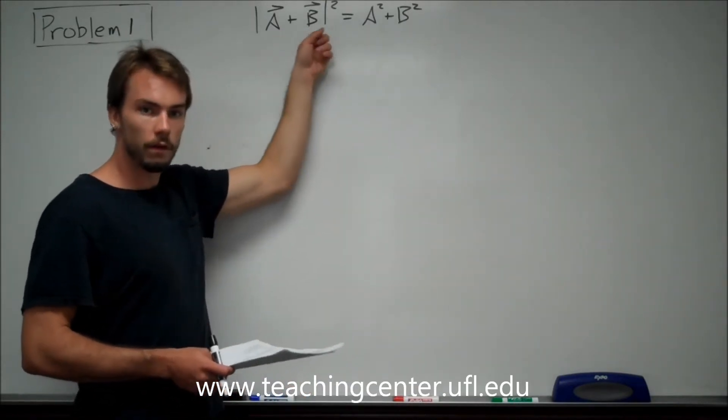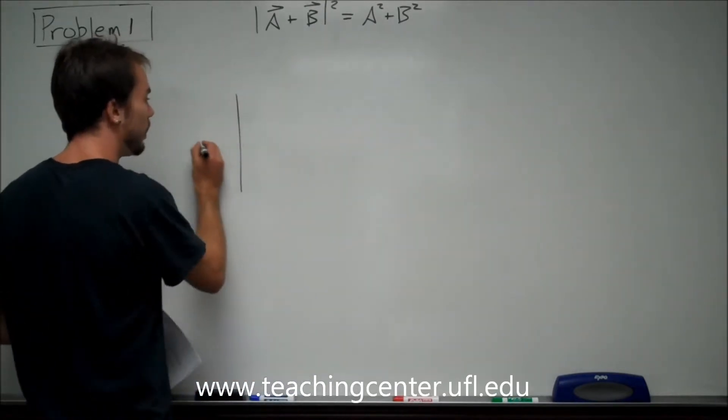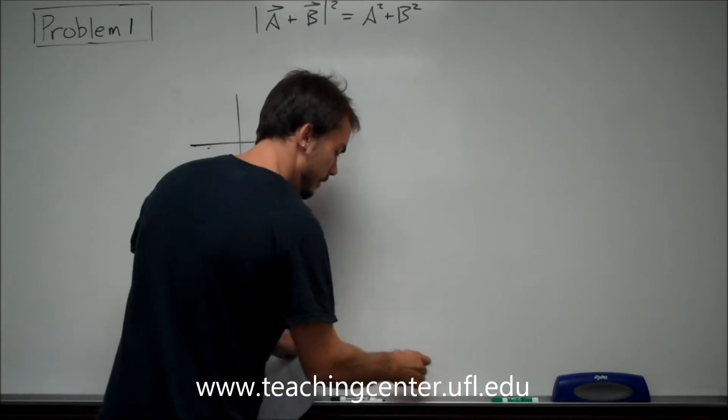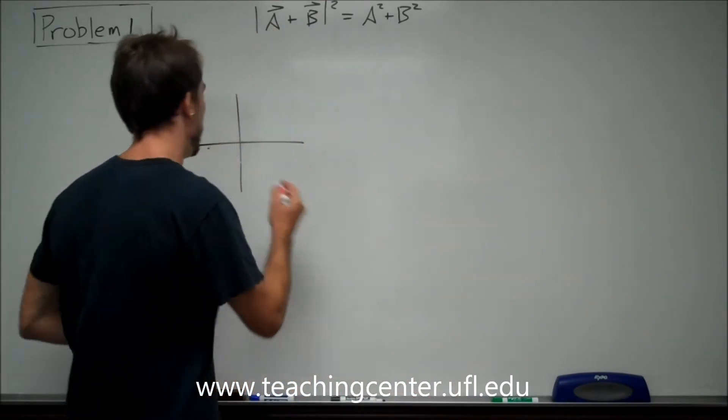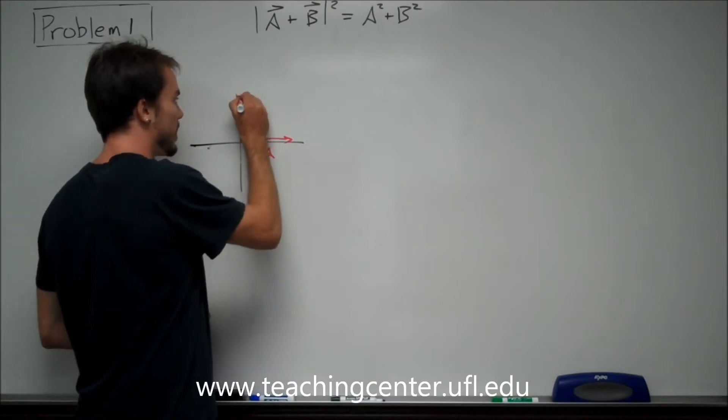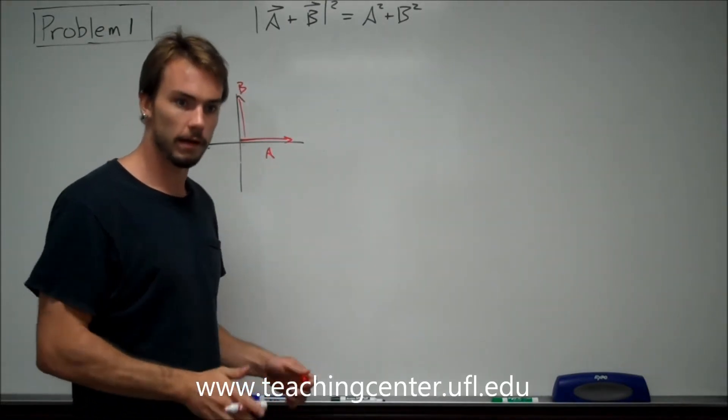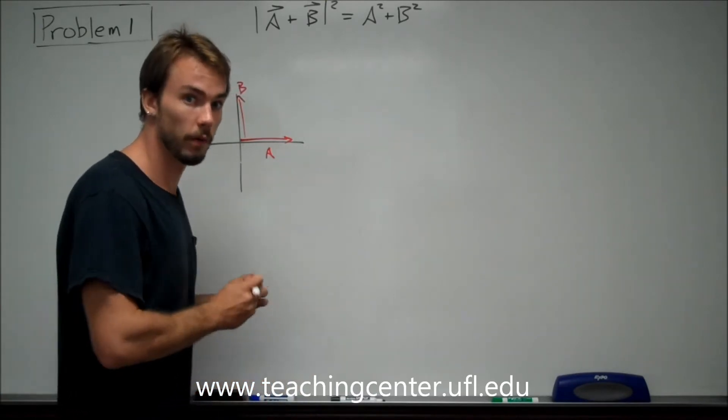If you had two vectors that are perpendicular, we have a vector A and a vector B that's perpendicular. Now, they don't say perpendicular in this problem. I'm just defining these two vectors as being perpendicular to one another.